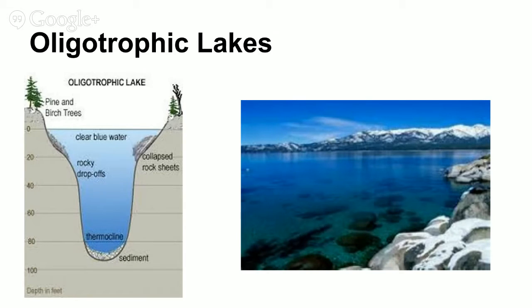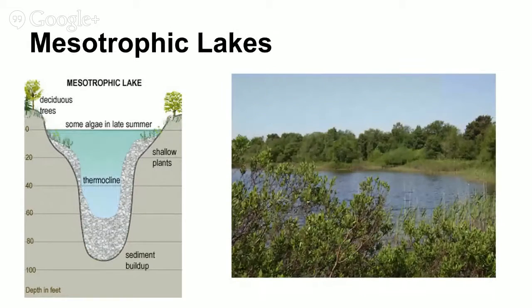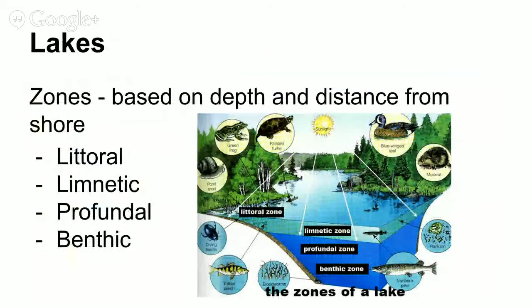So oligotrophic is nutrient poor, eutrophic is nutrient rich, and mesotrophic is somewhere in between on a nutrient scale. Within a lake there are different zones, and those zones are determined by the depth of the water and the distance from the shore.